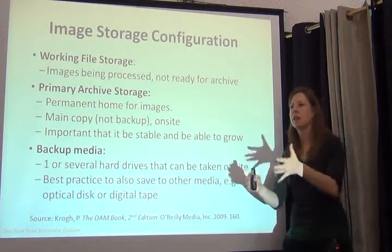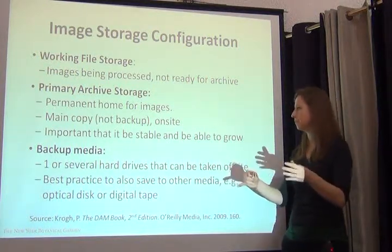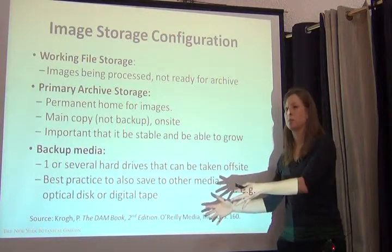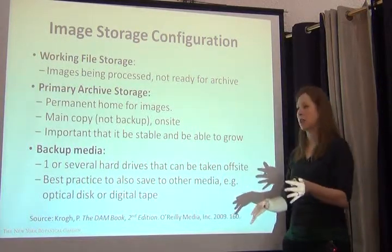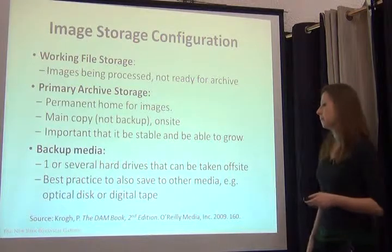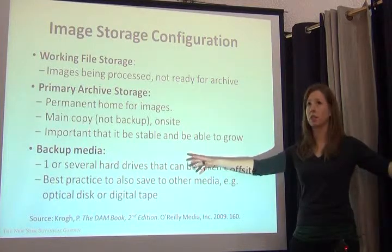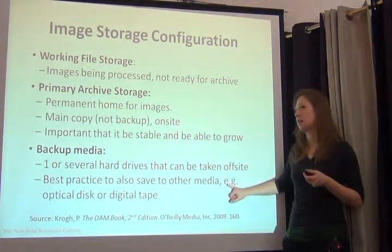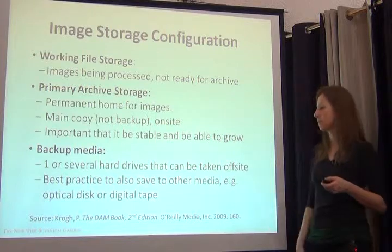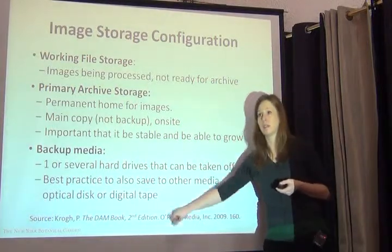The archive is not liquid — meaning images won't come in and out of there, they'll stay there. This isn't your copy; this is your main one. It's important that it be stable and that it can grow. Finally, you have your backup, which is your parallel to your primary — and you can have several of these, several hard drives that duplicate your primary. It's best that it be removed from the physical location of the primary: not all your eggs in one basket. It's also best practice to save in another media type, just in case. A lot of people still save to optical disc — meaning CD, DVD — or if you have the option, save to tape.